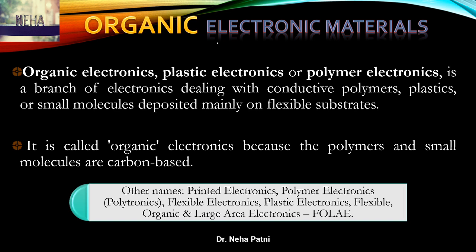Let us go ahead with what we understand by organic electronics. Other names for it include printed electronics, polymer electronics, flexible electronics, plastic electronics, and flexible organic large area electronics. In the market you will find it as polymer electronics. It is basically a branch of electronics but with an organic touch, meaning the compound is organic and is deposited on a flexible substrate.